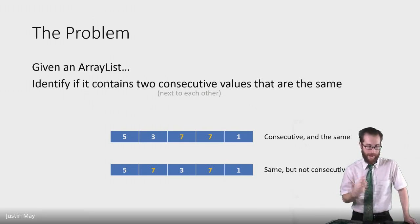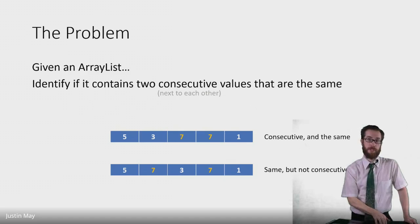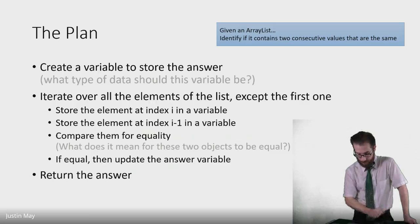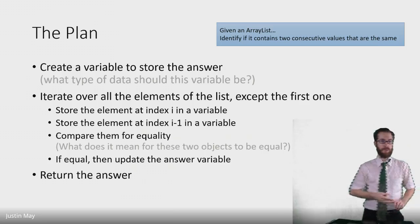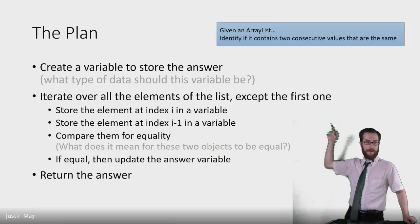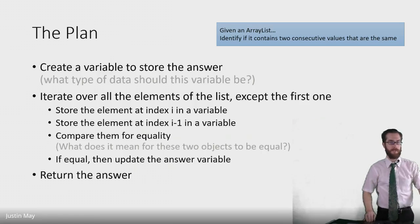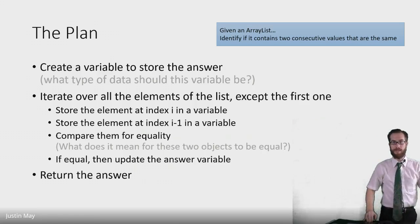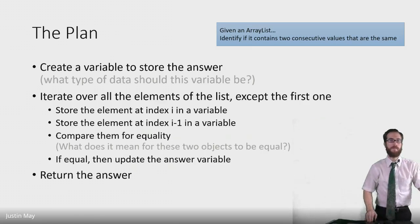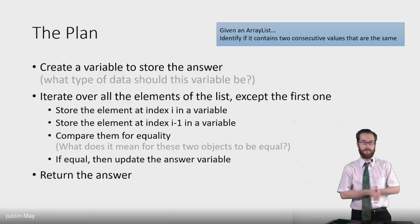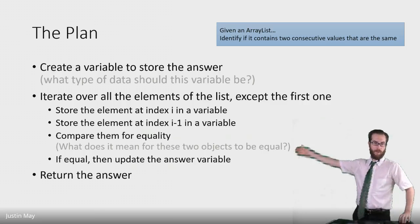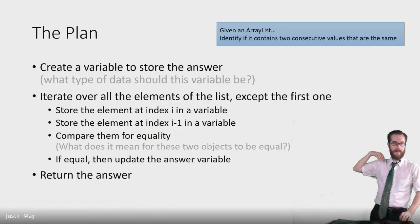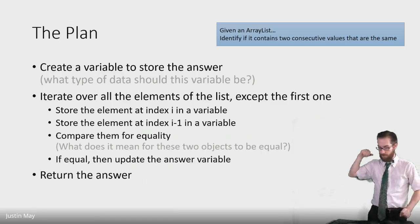So we're going to talk about how we can accomplish this using a for loop. This is the plan for our algorithm. Step one: create a variable to store the answer. It's almost always step one of any algorithm — create a variable to store our answer. We'll have to figure out what type of data this variable should be.